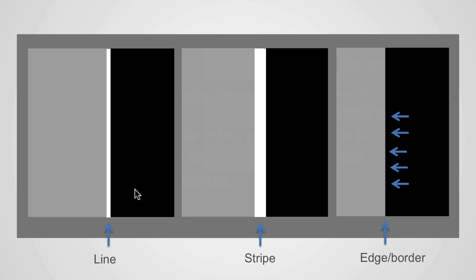In discussion of the mediastinum and these interfaces, terms such as line, stripe, and edges are frequently used, and these terms need further clarification. The term line refers to an extended longitudinal shadow in the lung or mediastinum no greater than 2 mm in diameter. A stripe is a line that measures 2 to 5 mm in diameter. An edge is formed when a structure interfaces with the lung to create a border that does not qualify as a line or stripe.